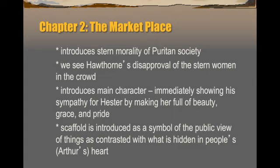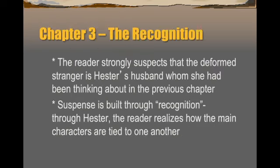The scaffold is introduced for the first of three times in the book, as a symbol of the public view of things, contrasted with what is hidden in people's hearts — in particular, the guilty male party, Arthur Dimmesdale. Chapter 3, The Recognition, builds suspense: the reader strongly suspects that the deformed stranger who happened to arrive on the day of Hester's punishment is Hester's husband. Hester realizes her husband is there watching, and the reader sees how the main characters are tied to one another.